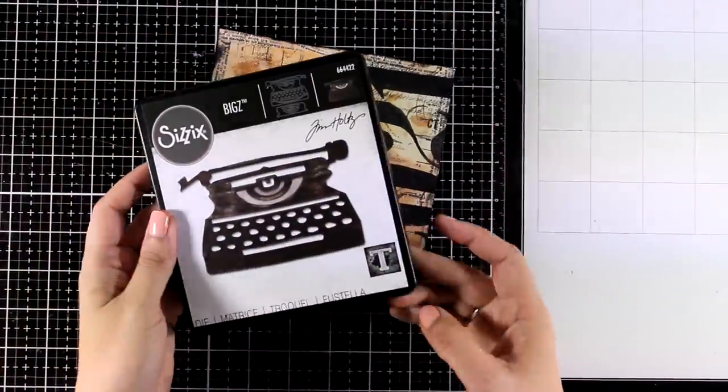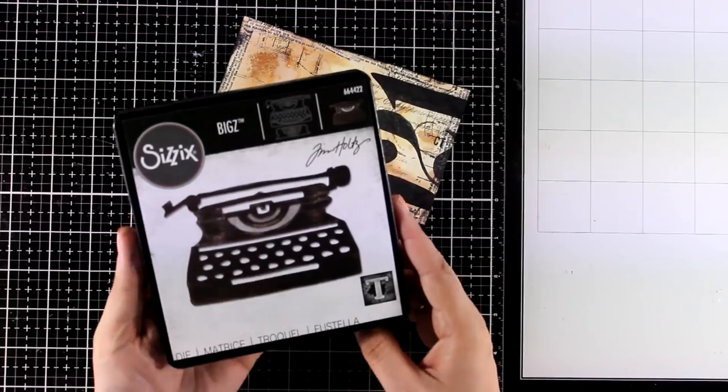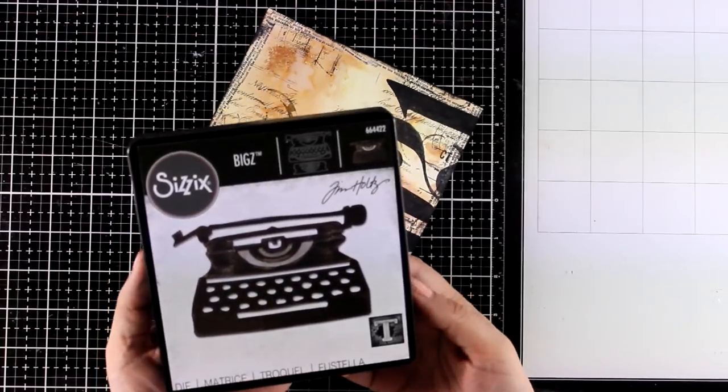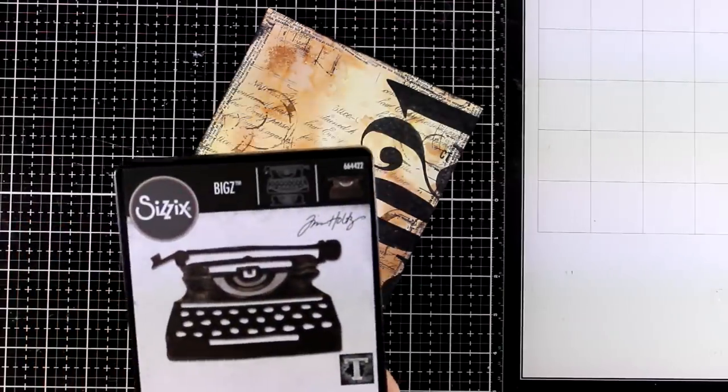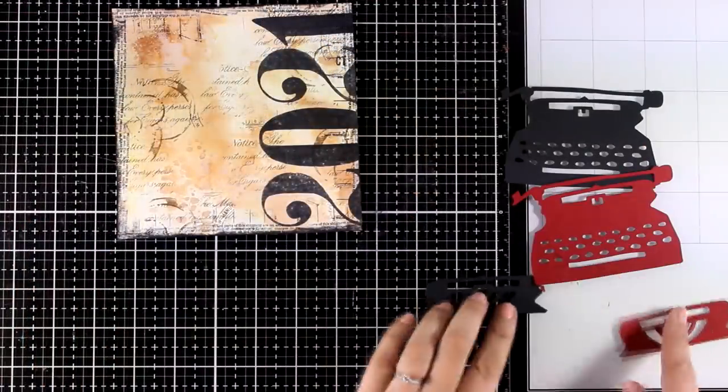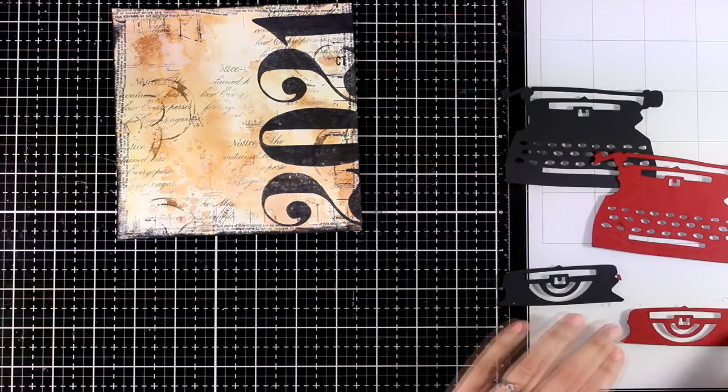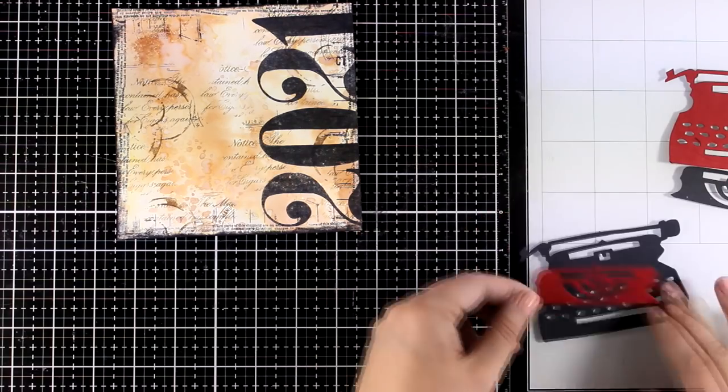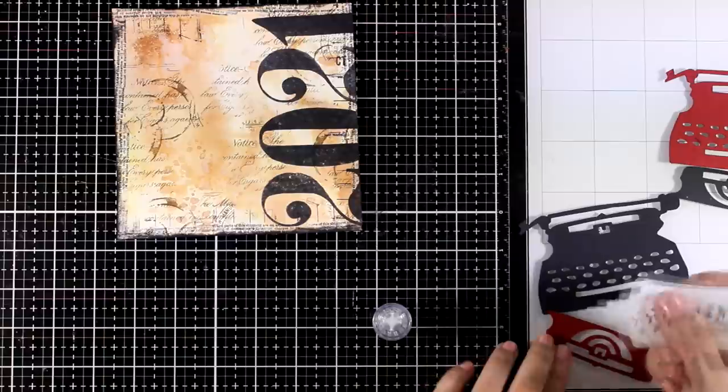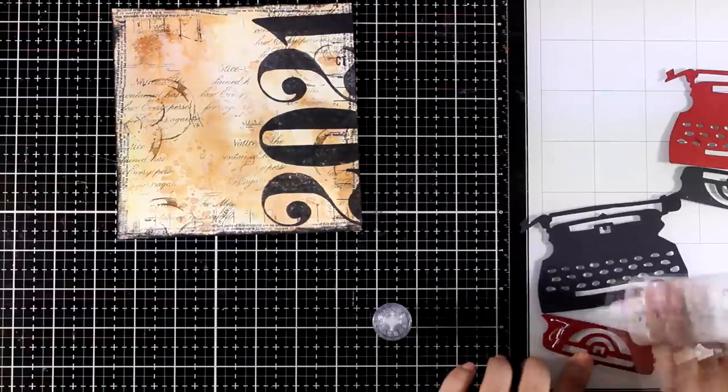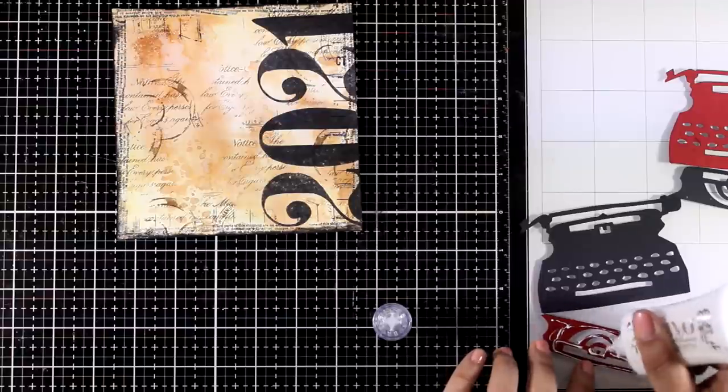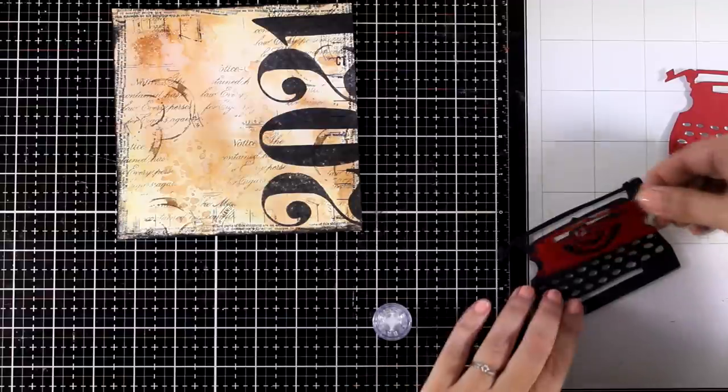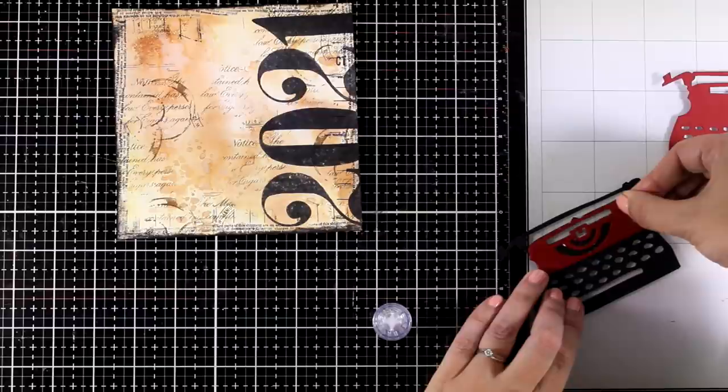For my focal point today, I decided to go with this typewriter. I had it in my stash for a few months now, and I've been meaning to use it. So today I think is the perfect opportunity before the year ends. I decided to go with red and black for my typewriter. After all, this is going to be a Christmas page, and I absolutely love the traditional Christmas color combo. That's why my typewriter is going to have red accents on top.